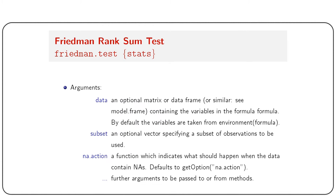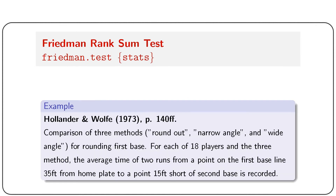The data argument is an optional matrix or data frame containing the variables in the formula; by default variables are taken from the formula environment. The subset argument specifies an optional vector for selecting a subset of observations. The na.action argument handles missing values — it will exclude all missing values from the data before applying the Friedman test.